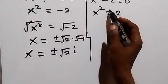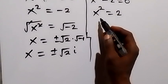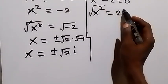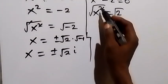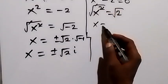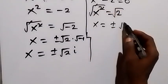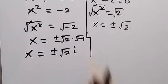Similarly from here, taking the square roots on both sides. So square root on this side, square root on this side. So square cancel square root, x is now equals to plus or minus square root of 2.